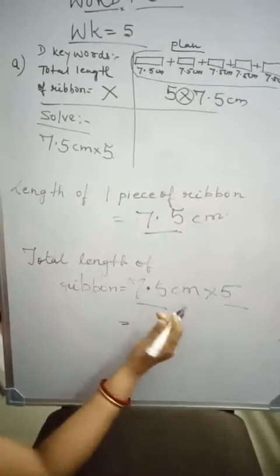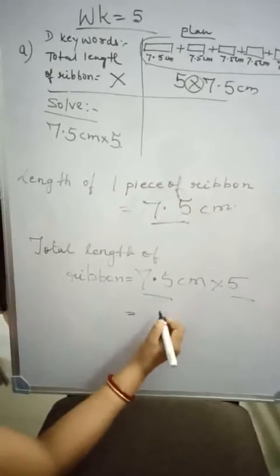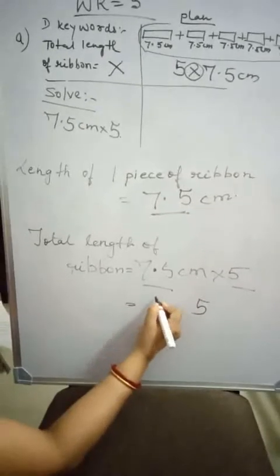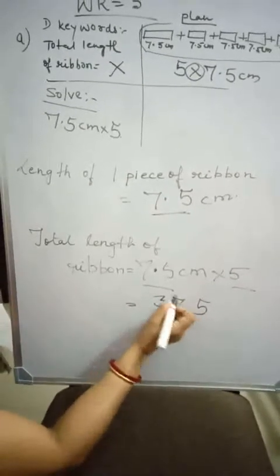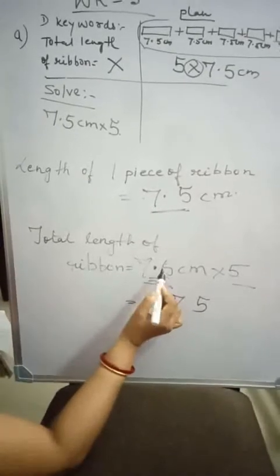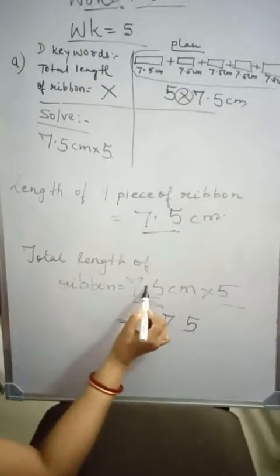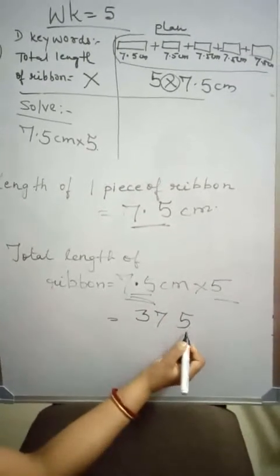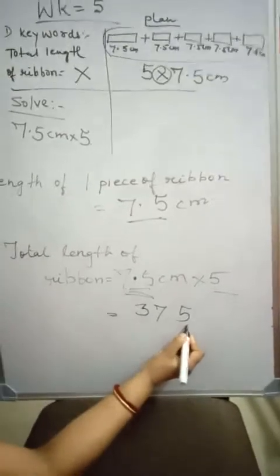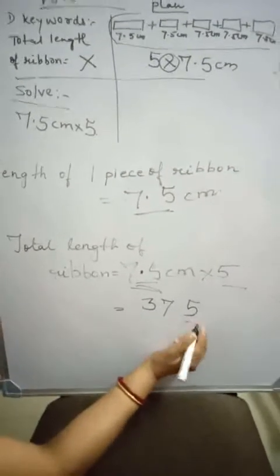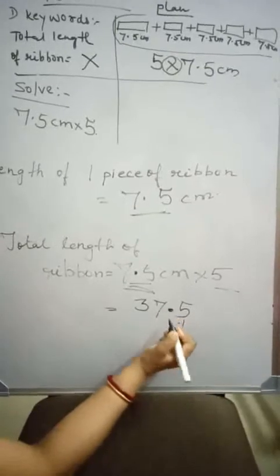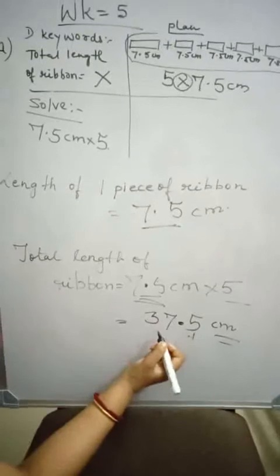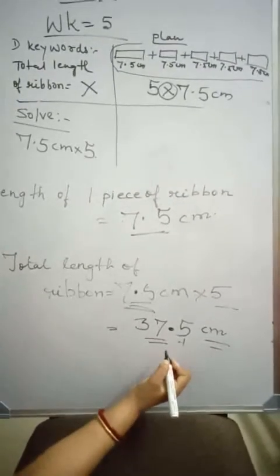Firstly, forget about the decimal. Simply multiply 75 into 5. 5 fives are 25, write 5 carry 2. 5 sevens are 35, plus 2 is 37. Now this is a decimal number. After the decimal there is 1 decimal place. So in the product also, starting from the right side, after the first digit we put the decimal point. So the answer is: the total length of 5 pieces of ribbon is 37.5 cm.